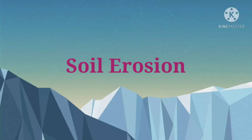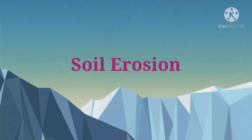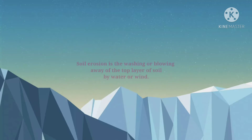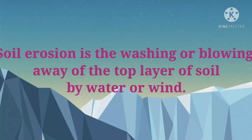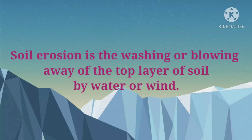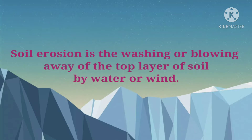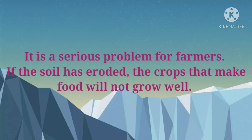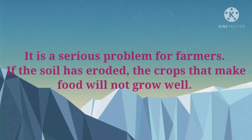Soil Erosion is the washing or blowing away of the top layer of soil by water or wind. It is a serious problem for farmers. If the soil has eroded, the crops that make food will not grow well.